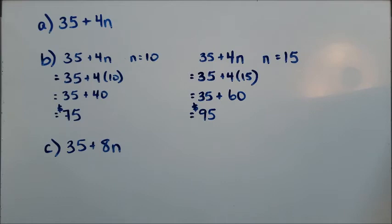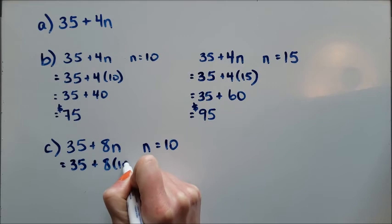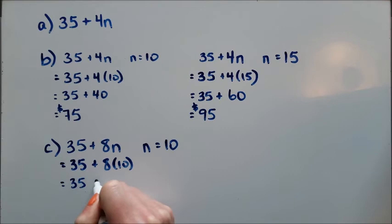It asks me for how much it would cost for 10 people to come now. I'm going to take that n equals 10, and I'm going to plug it in. 35 plus 8 times 10. I've got to do that multiplication first. 35 plus 80, and 35 plus 80 will be $115.